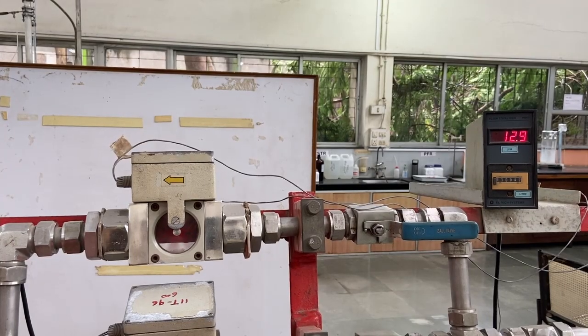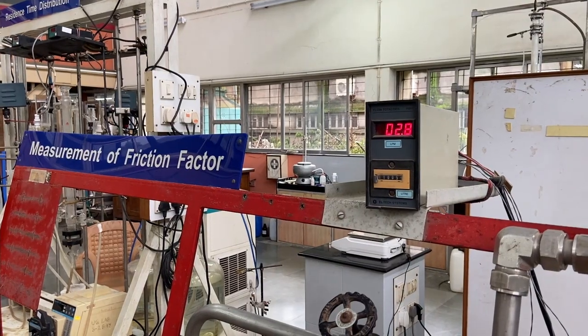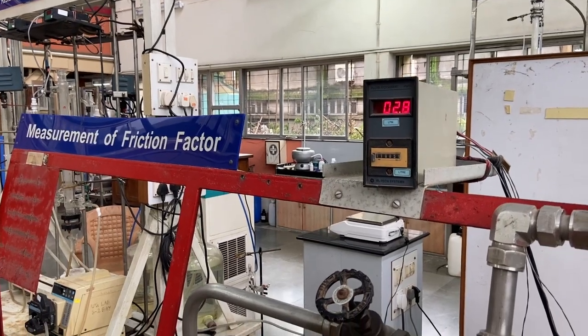We will record the corresponding flow rate and pressure readings. If the flow rate is more than 10 lpm, we use flow meter 1 and for flow rates less than 10 lpm, we use the second.